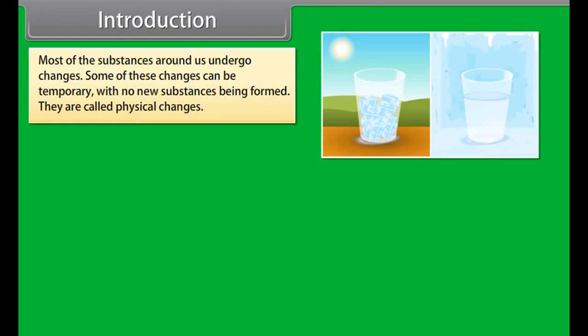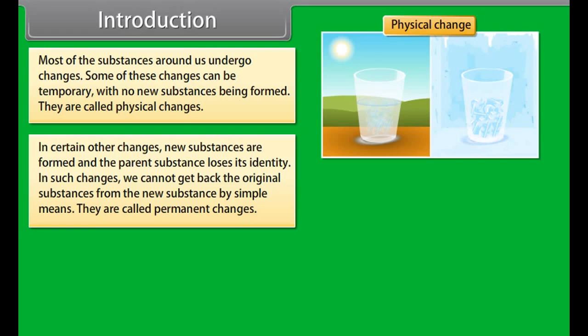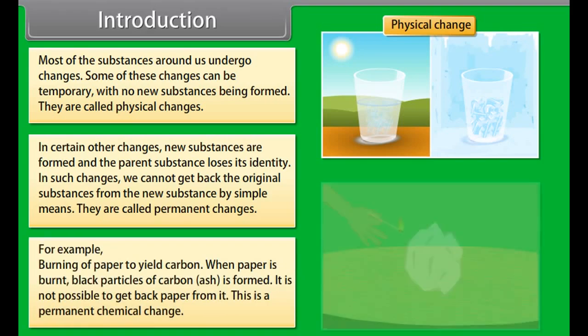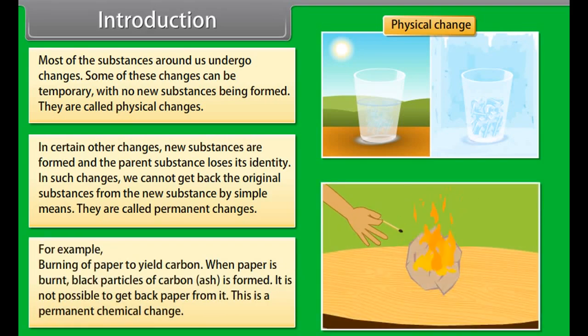Introduction: Most of the substances around us undergo changes. Some of these changes can be temporary with no new substances being formed — they're called physical changes. In certain other changes, new substances are formed and the parent substance loses its identity. In such changes, we cannot get back the original substance by simple means — they're called permanent changes. For example, burning of paper yields carbon ash, and it is not possible to get back the paper. This is a permanent chemical change.